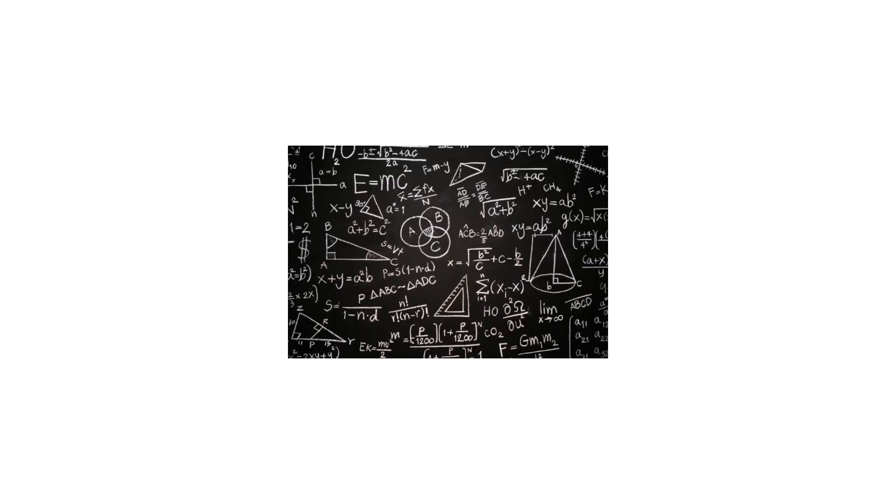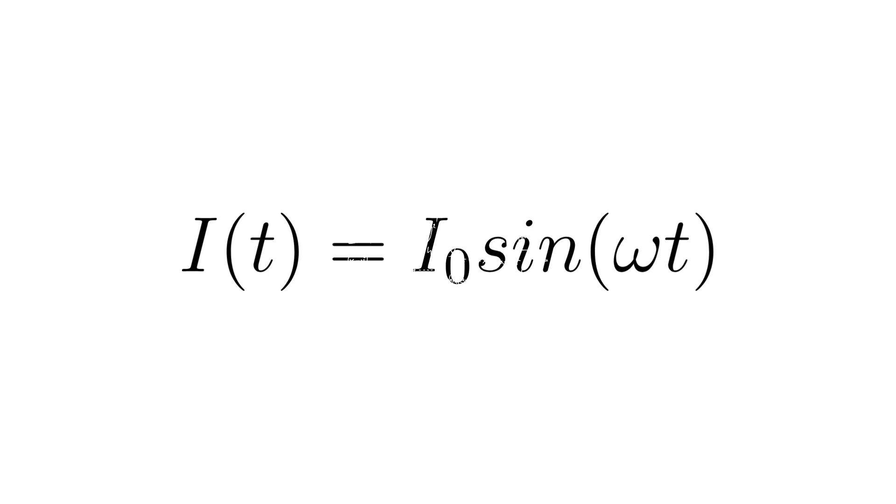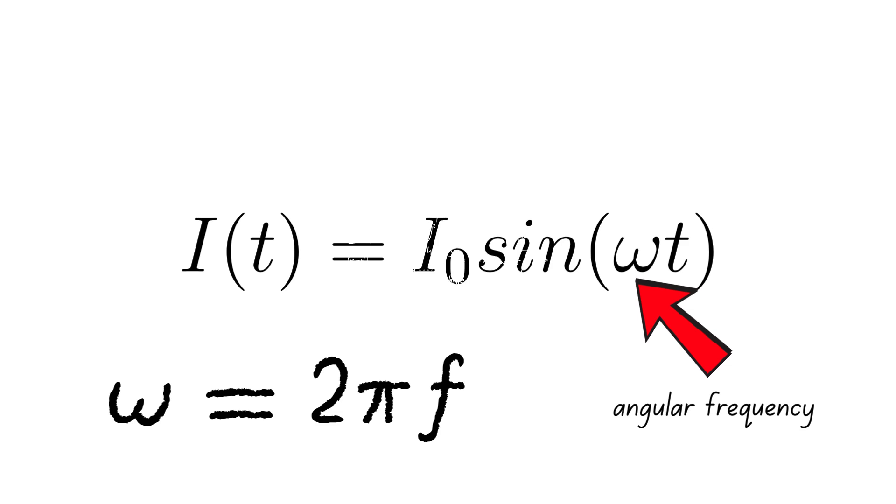We can mathematically describe alternating current as a sine function, where this is the maximum current and omega is the angular frequency of the AC. Omega is a function of the frequency of the AC.